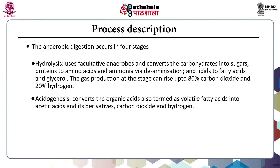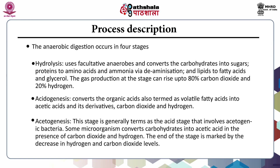Acidogenesis converts the organic acids formed — called volatile fatty acids — into acetic acids and its derivatives, along with generation of carbon dioxide and hydrogen. The next stage, acetogenesis, is also called the acid stage and involves acidogenic bacteria. Some microorganisms convert carbohydrates into acetic acid in the presence of carbon dioxide and hydrogen. The end of this stage is marked by a decrease in the level of hydrogen and carbon dioxide.